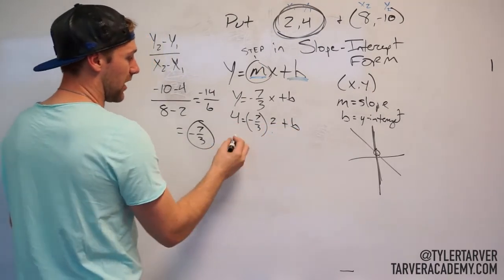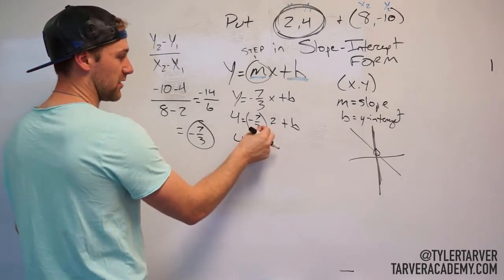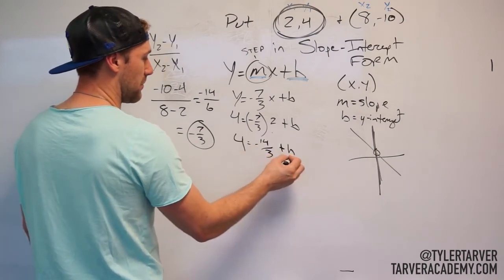We've got 4 here. I'm going to keep that where it is. I'm going to multiply these two first. So I've got negative 14 over 3 plus b.